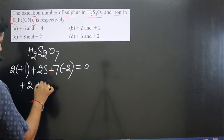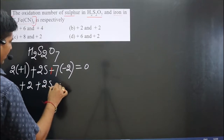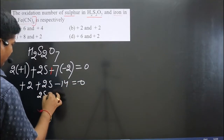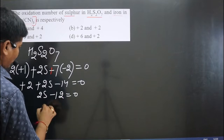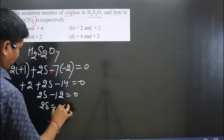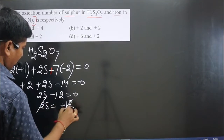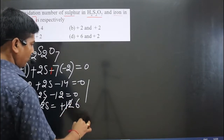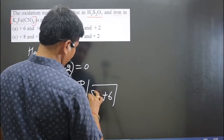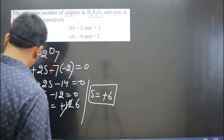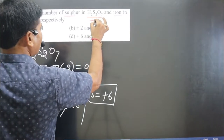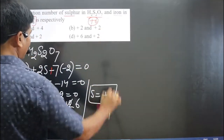Simplifying: 2(+1) + 2(S) + 7(−2) = 0, which gives +2 + 2S − 14 = 0, so 2S − 12 = 0, meaning 2S = +12, and therefore sulfur is equal to +6. So in the first compound, sulfur is present in the +6 oxidation state.